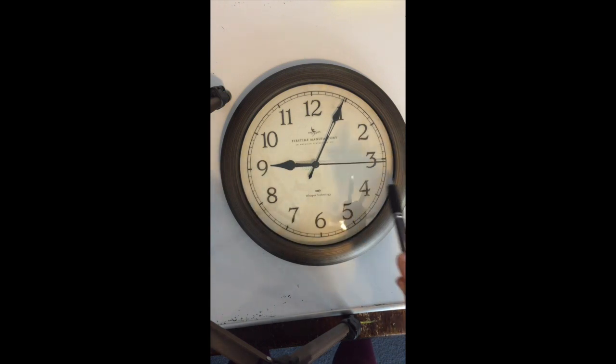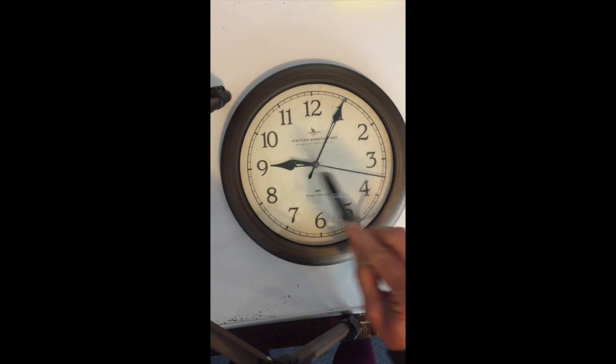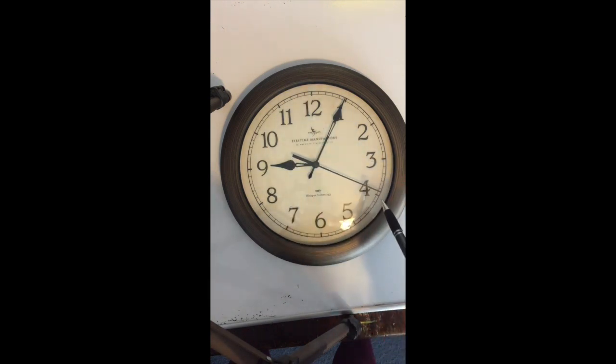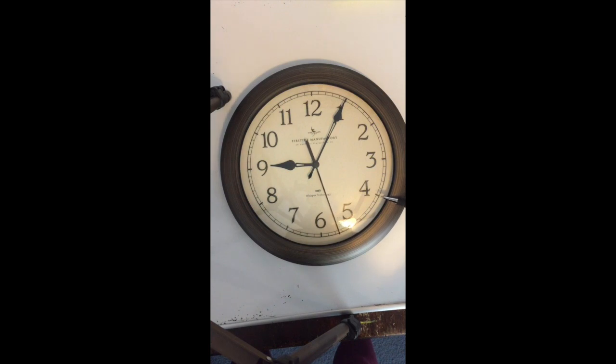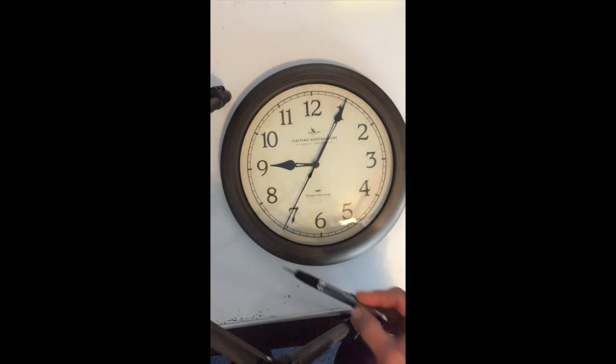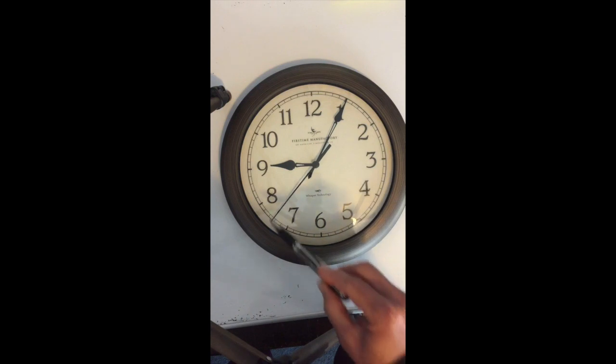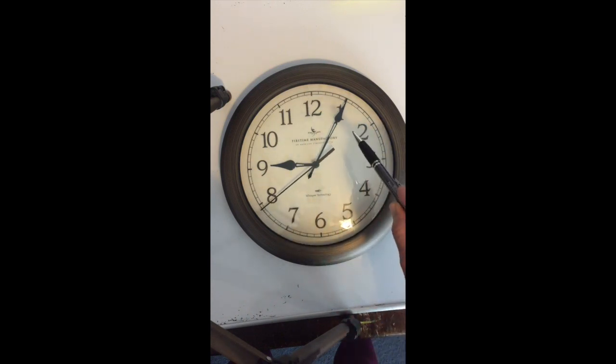So now we're at 9:05 and 20 seconds right now, because there are five seconds within each number, and five times four is 20. Now we're at 9:05 and 30 seconds, 9:05 and 35 seconds. So 60 seconds gives us a minute and 60 minutes gives us an hour.